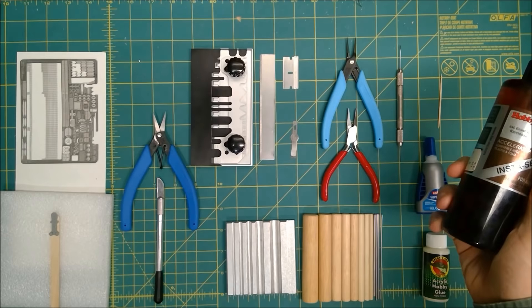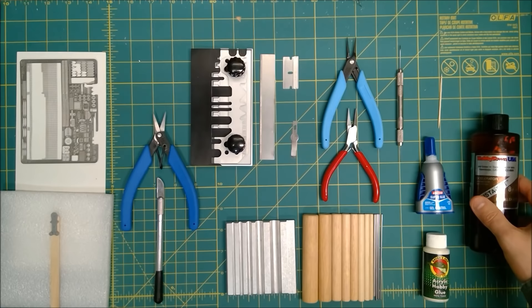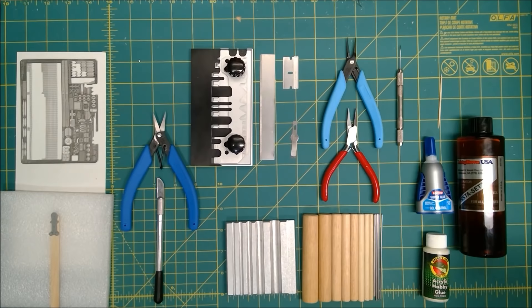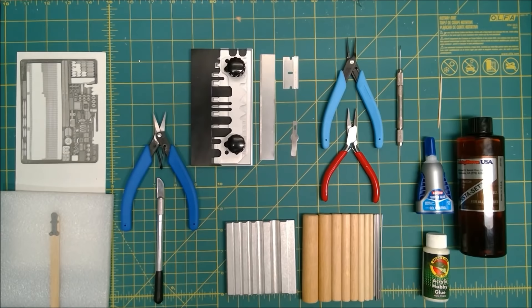I rarely need to use this with the Loctite, but sometimes you still need to use CA Accelerator. This speeds up the drying process of any CA type super glue. It'll go ahead and make this stuff dry instead of 10 seconds, instantaneously. So if you know that your piece is exactly where it needs to be, you can go ahead and set it. That's the rundown of the different tools I'm going to be using. And we're now going to dive in and look at the process of cutting, folding, rolling, and attaching your photo etch railings.